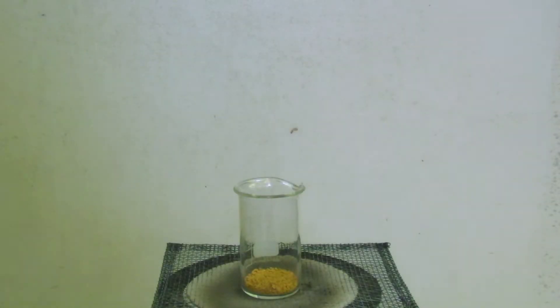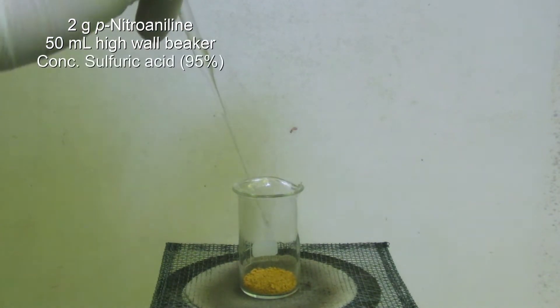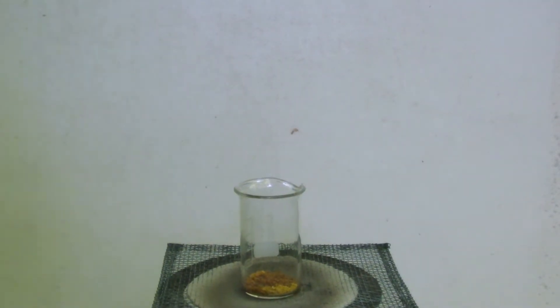For the experiment, 2 grams of P-nitroaniline are added to a 50ml highwall beaker and soaked with concentrated sulfuric acid. The beaker is placed on a wire gauze which is then heated with a Bunsen burner.